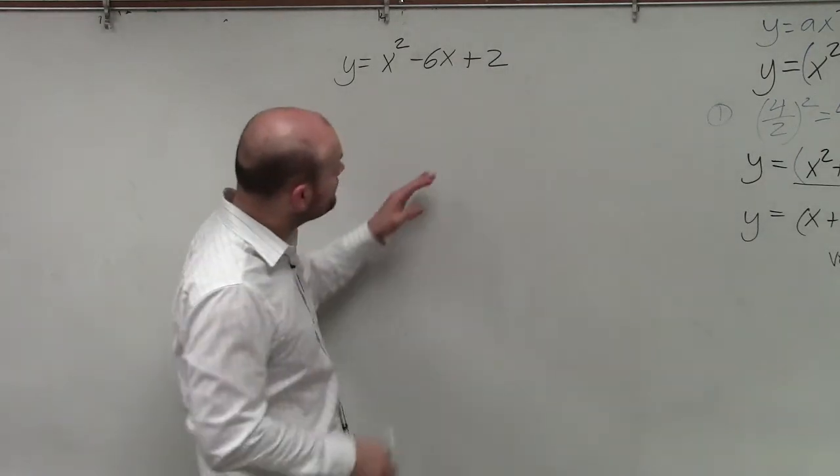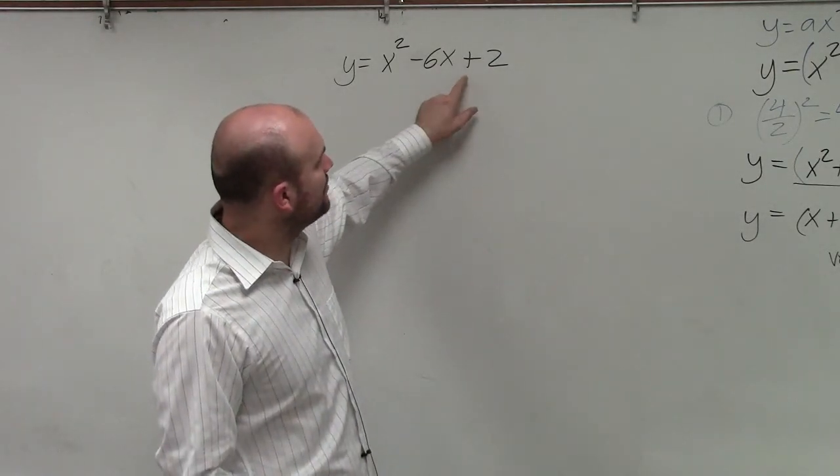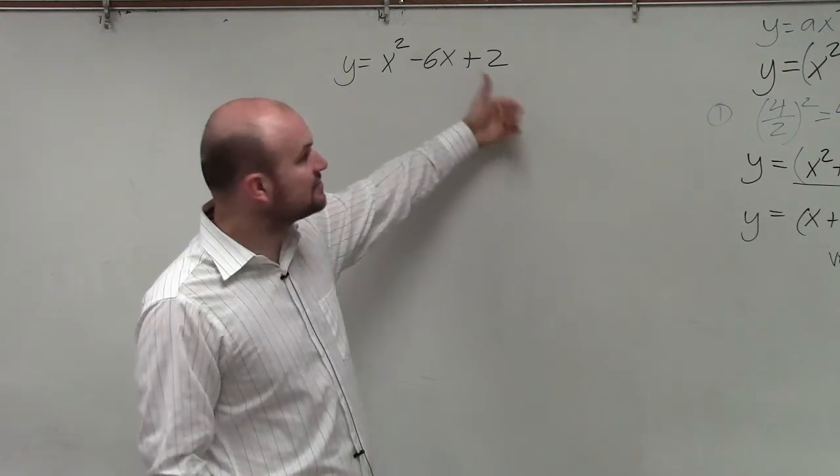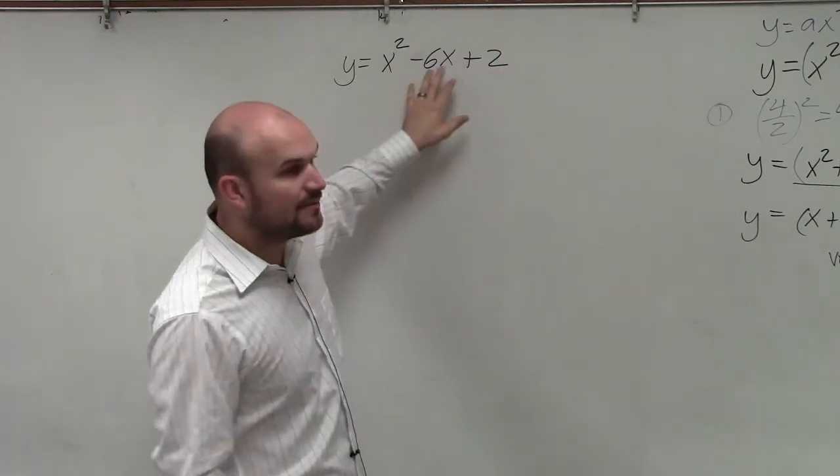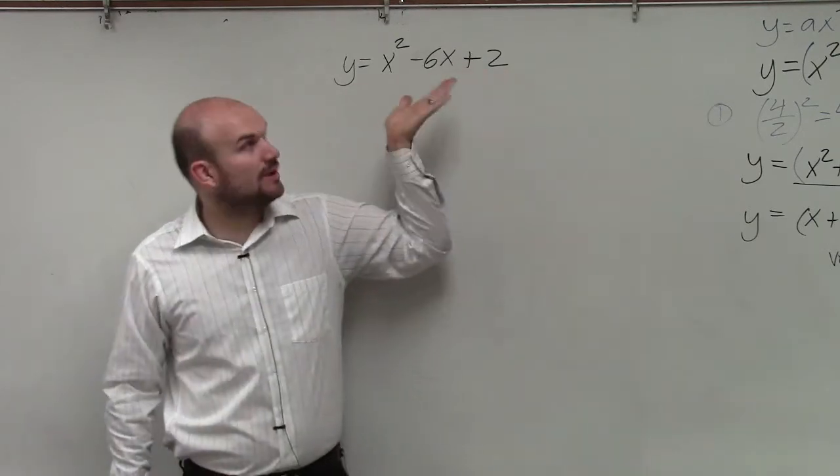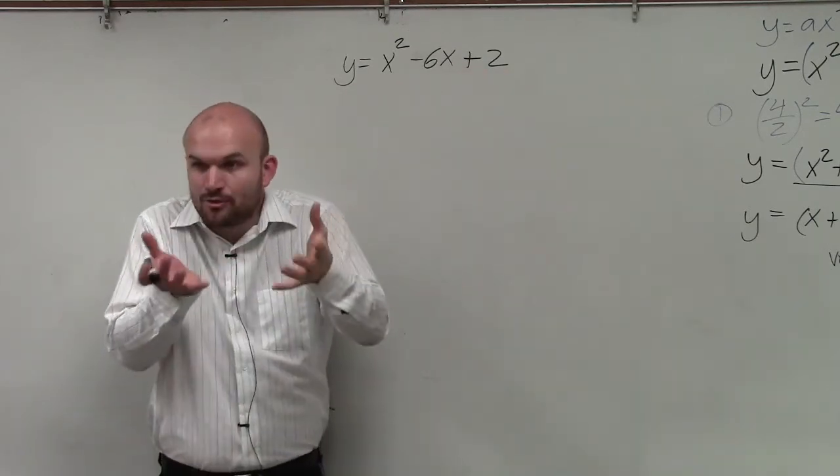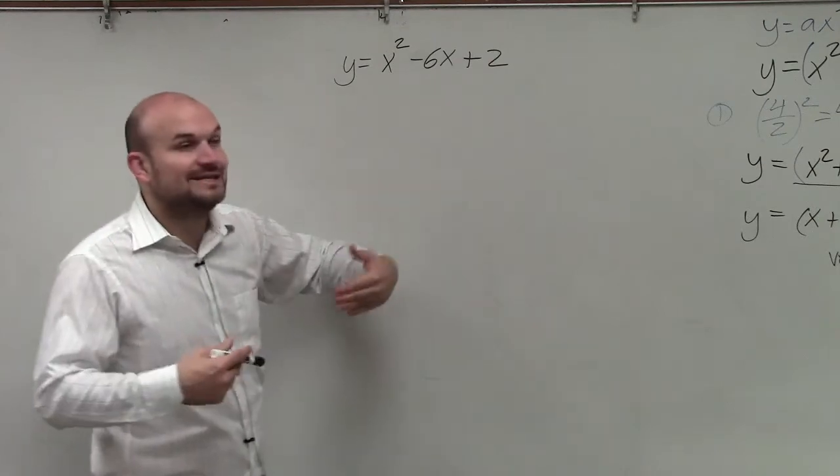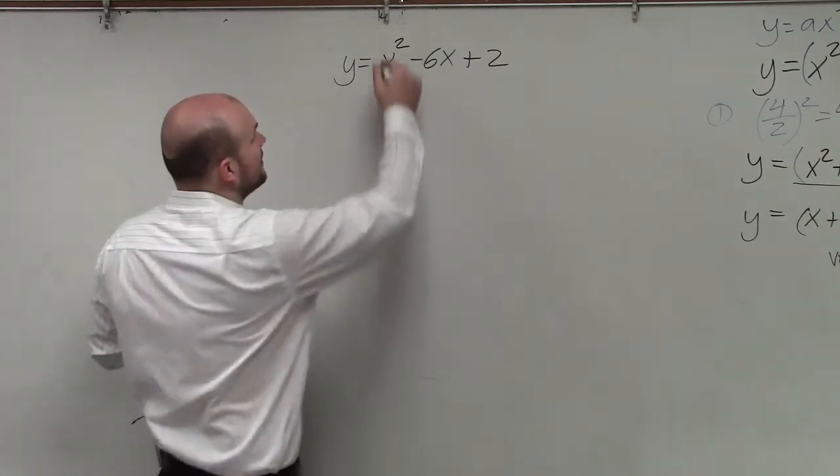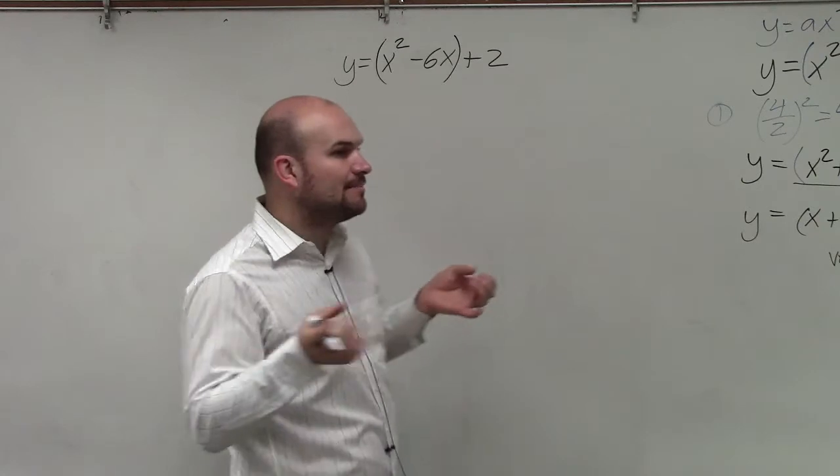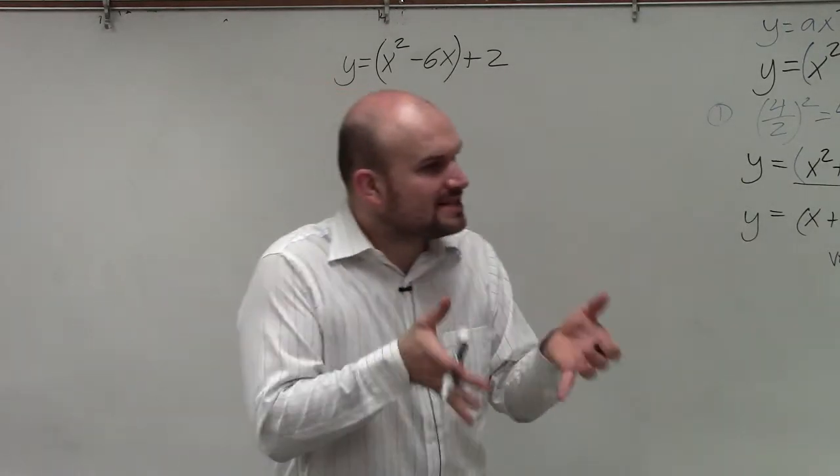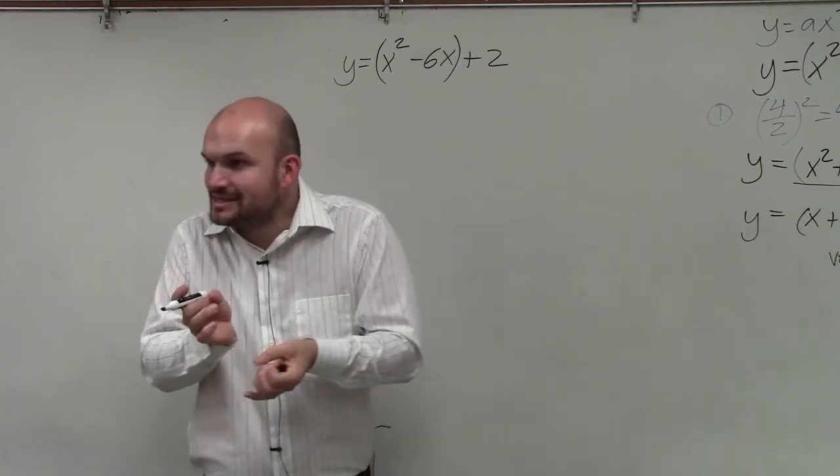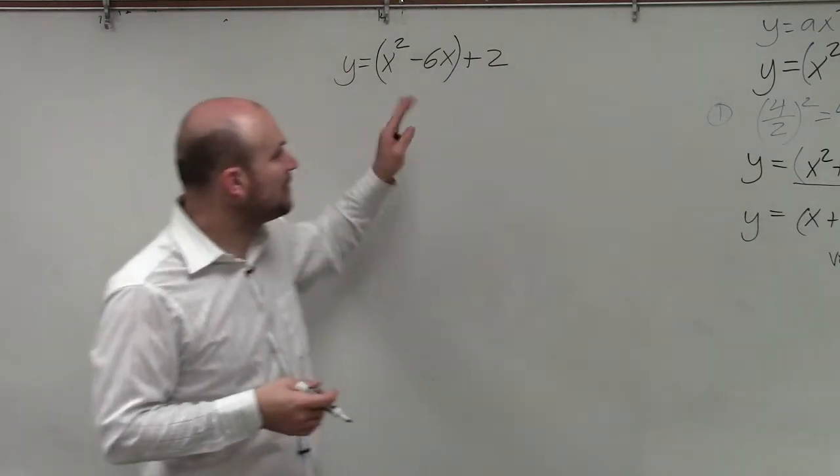What I'm going to have you guys do is practice going through completing the square. Because this one, if we want to solve this in vertex form, we look at this and we say we do not have a perfect square. I cannot factor this to a binomial squared. So therefore, I need to create my binomial squared. And to do that, I'm simply just going to create my parentheses over my first two terms.